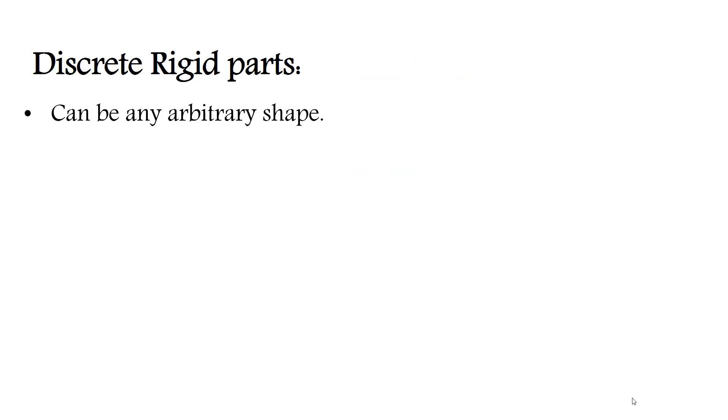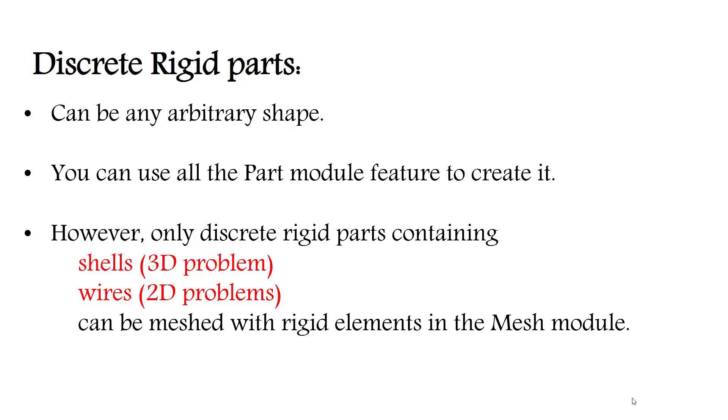Discrete rigid parts can be any arbitrary shape. You can use all the Part module features to create it. However, only discrete rigid parts containing shells in three-dimensional problems and wires in two-dimensional problems can be meshed with rigid elements in the Mesh module.